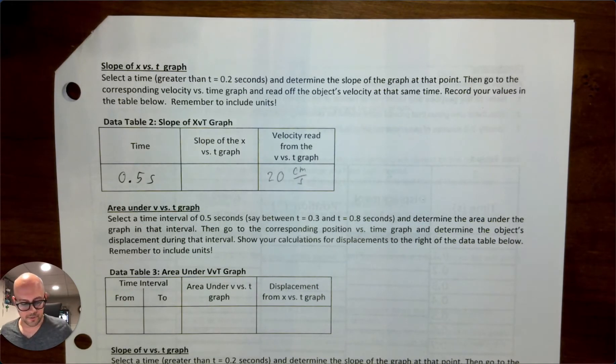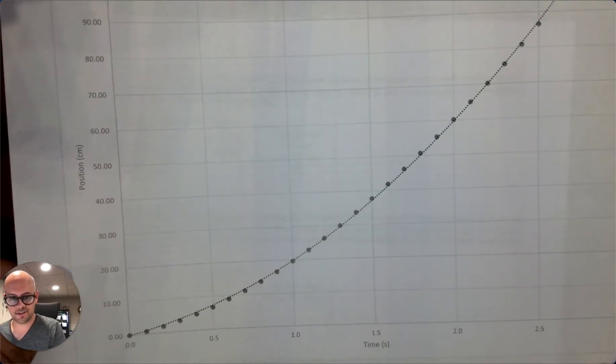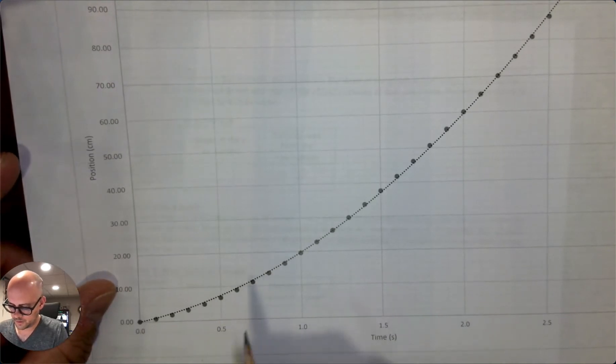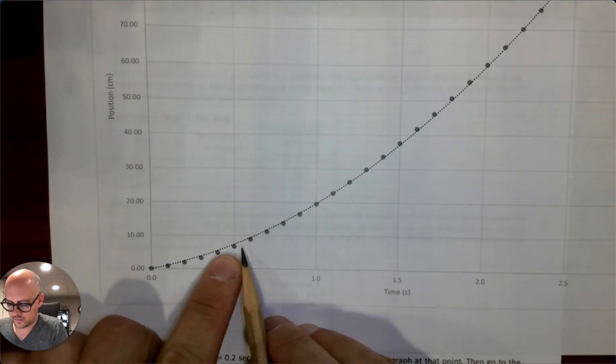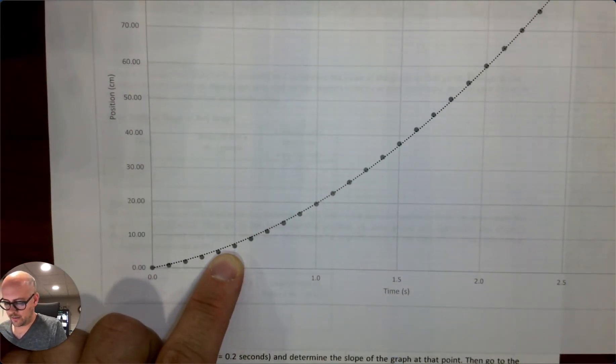You have to include units. The units of velocity are centimeters per second. Okay. Now it says the slope of the position graph. So you go to your position graph. You select the same time. Now there is a point at 0.5 seconds, but we're not going to use that.